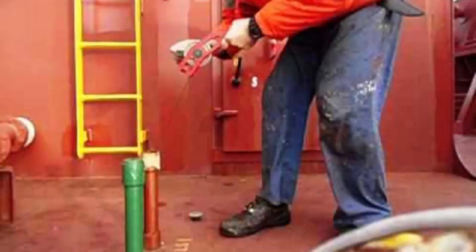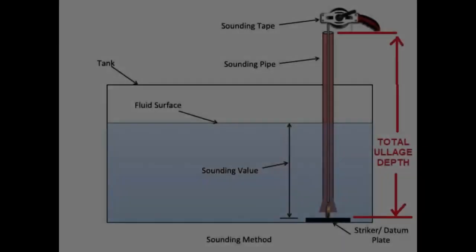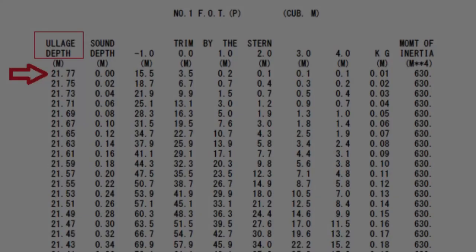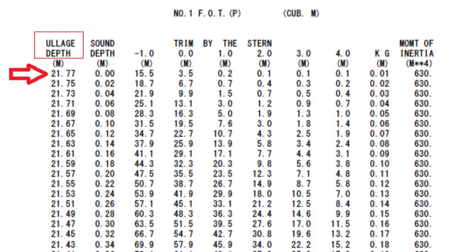When we want to measure the quantity of a fuel tank on board and find the volume in cubic meters, we must first know the total ullage depth of this tank. To find this, we open the manual book named sounding table, and we can find that it is equal to 21.77 meters for our desired tank.